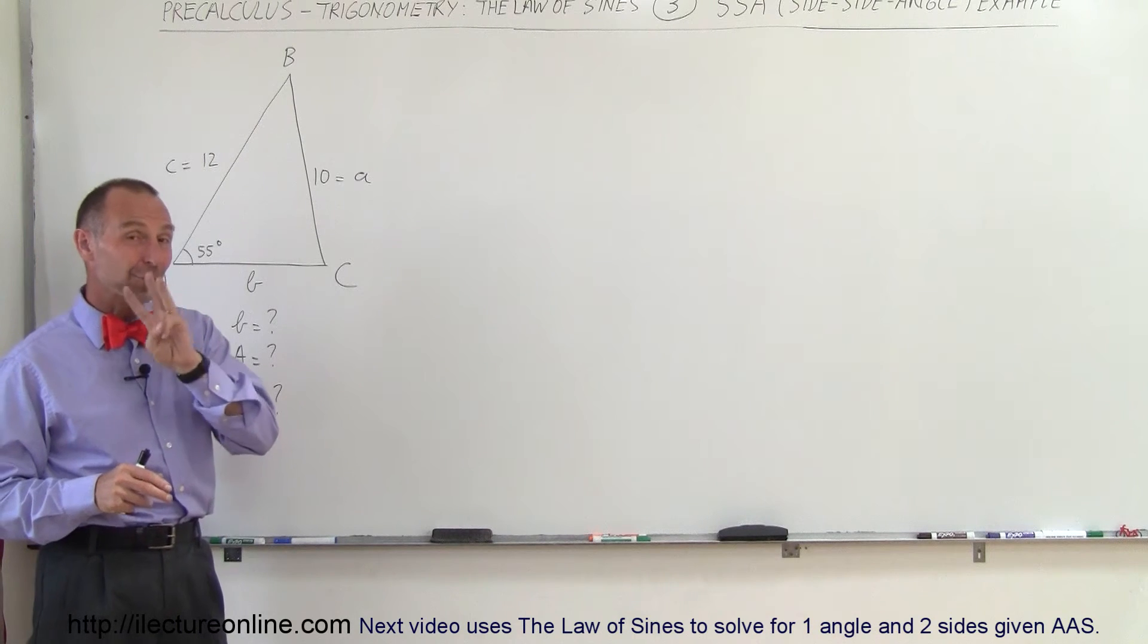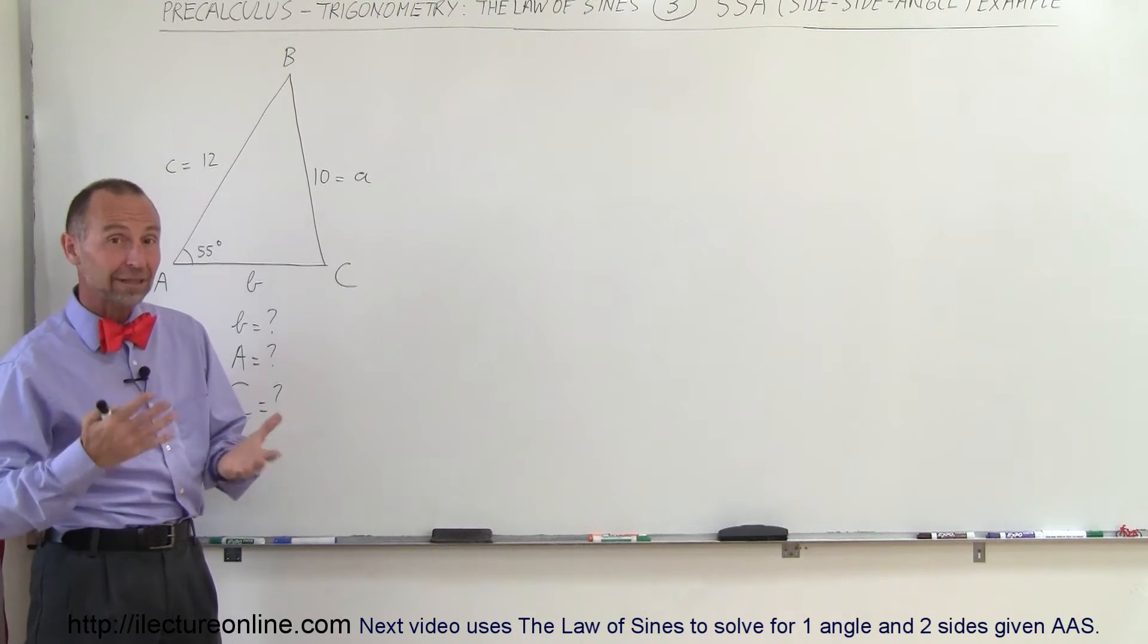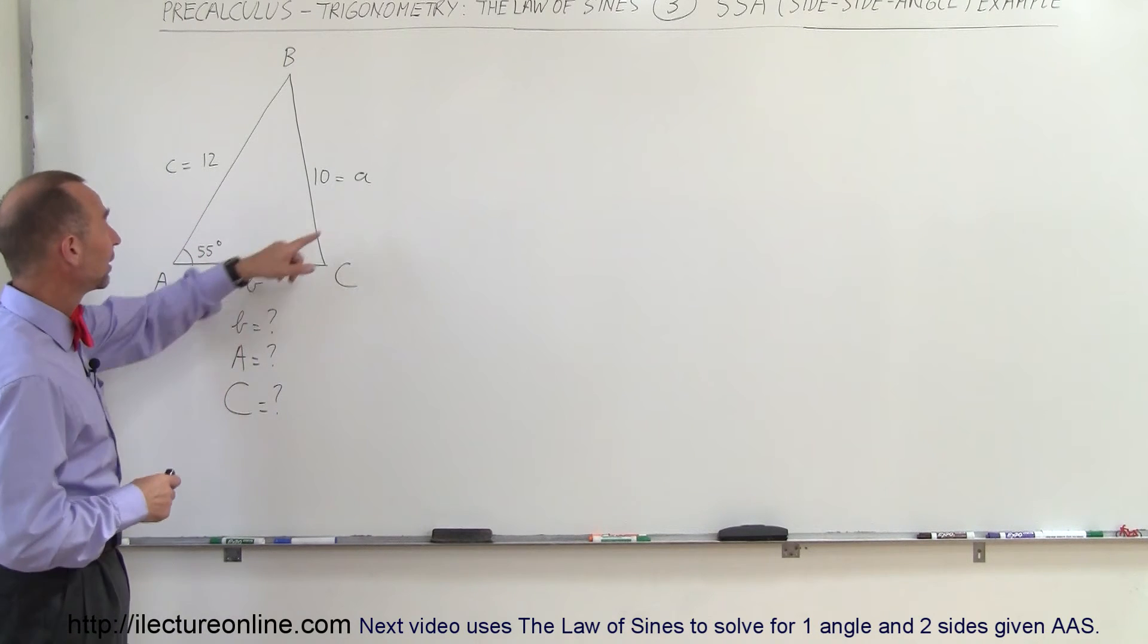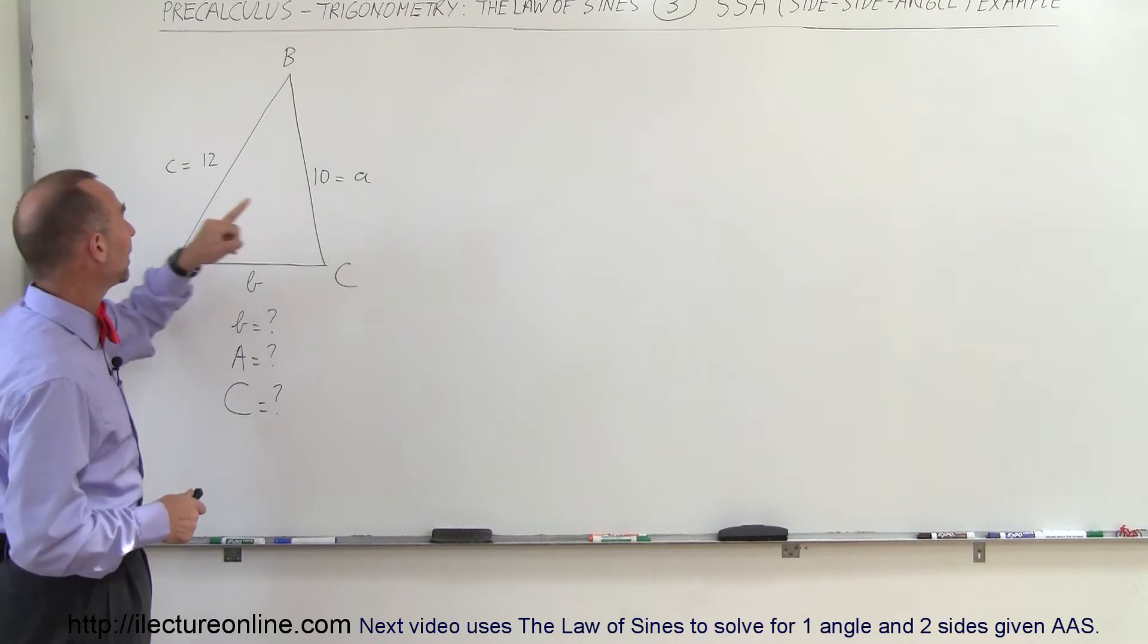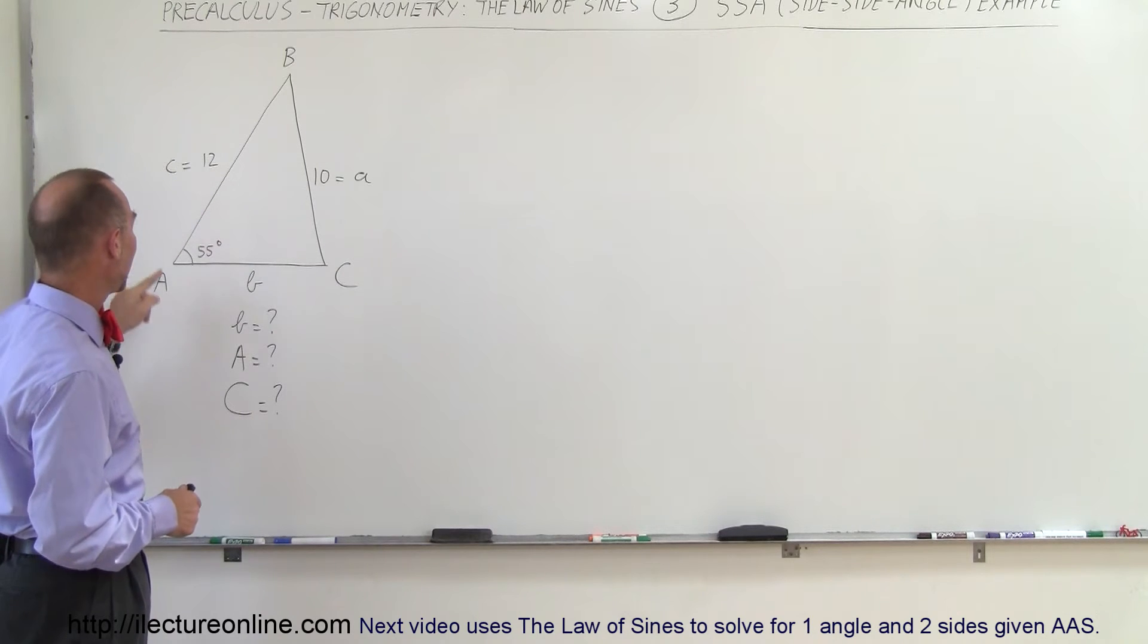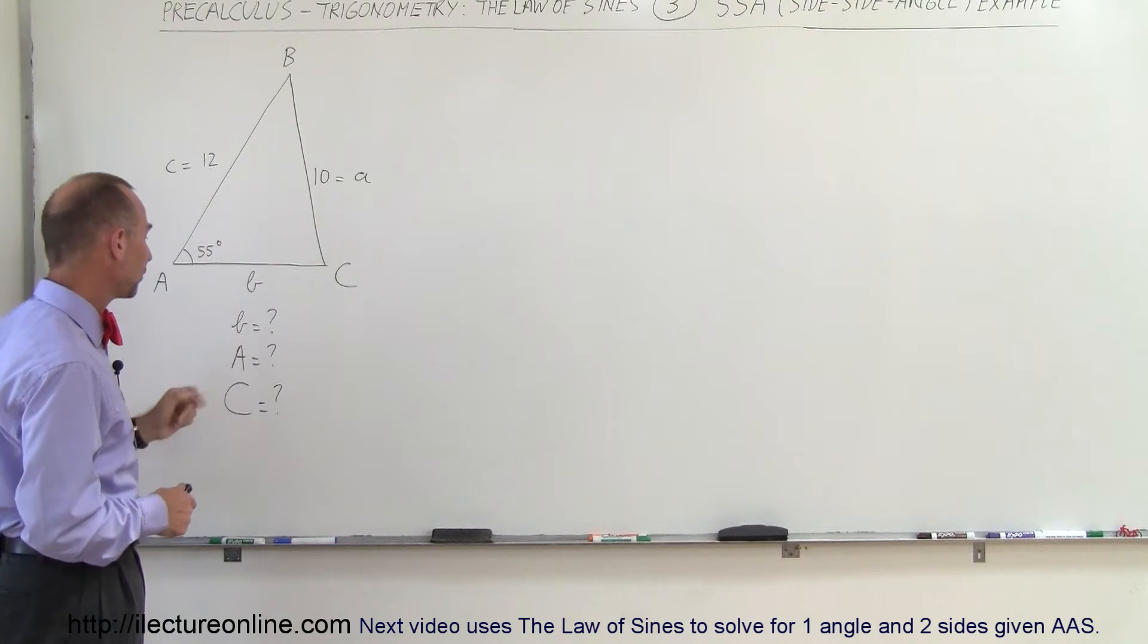You always need to know at least three things about a triangle before you can calculate everything else about the triangle. So here we have, we're given side A is equal to 10, side C is equal to 12, and angle A is 55 degrees.